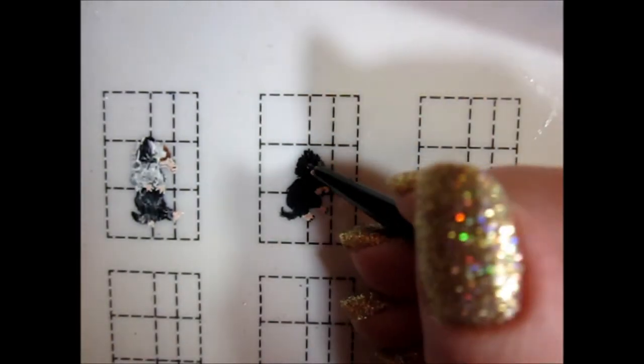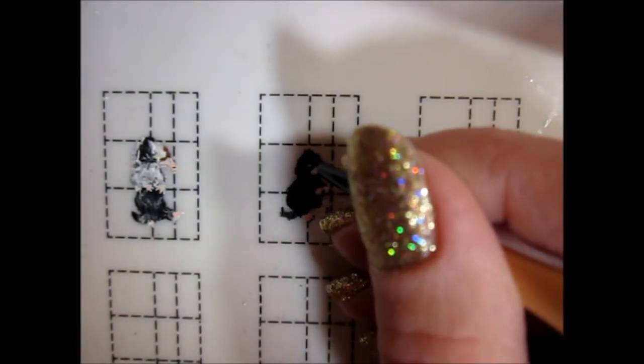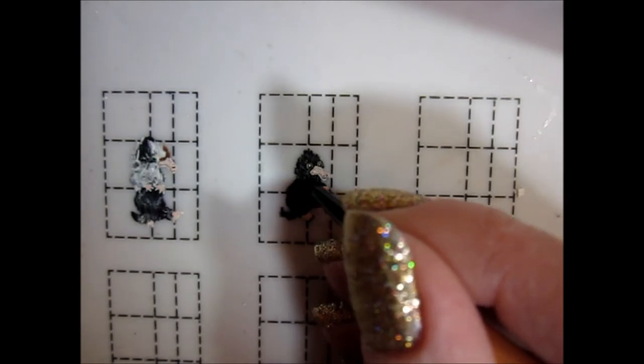To paint the fur, I went over the base of each Niffler's body with similar colors. For the black Niffler, I used a mix of grays and white to add small lines where the fur was most noticeable.